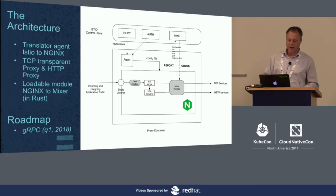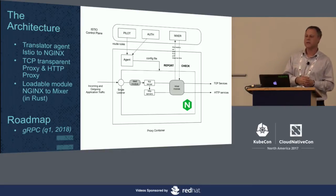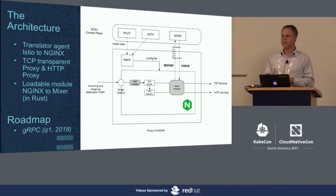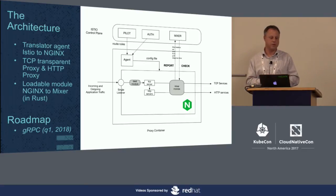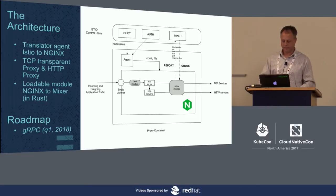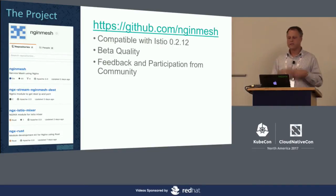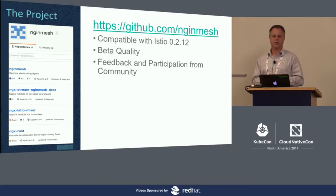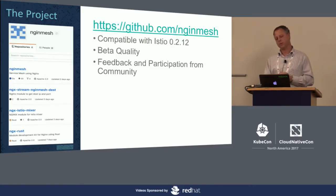The proxy is implemented with an agent deployed together with the Nginx container in the sidecar. The agent does a translation from auth and from pilot and generates those Nginx configuration files. You can deploy Nginx as an HTTP proxy as well as a transparent TCP proxy. We also built a pluggable module written in Rust that communicates with Mixer, so we're able to send telemetry information just as you would with Envoy's proxy.